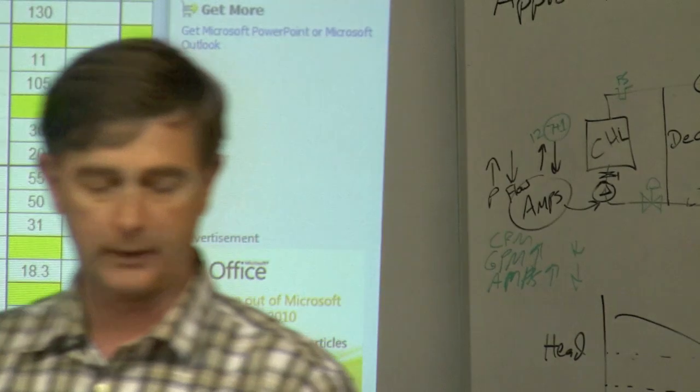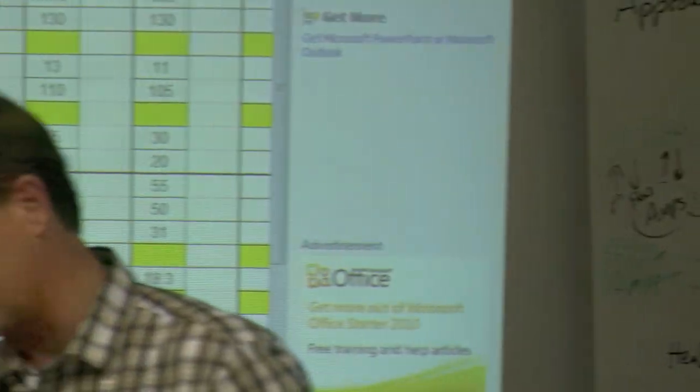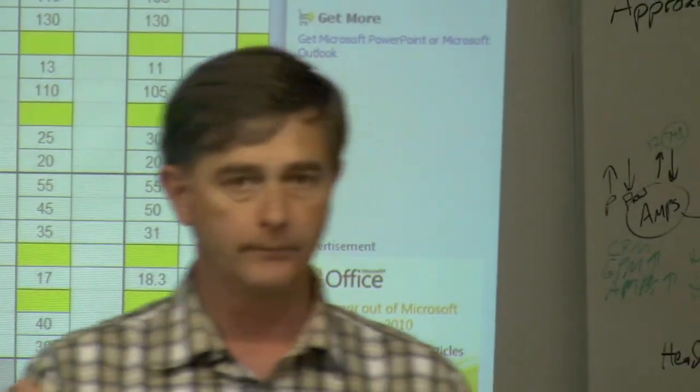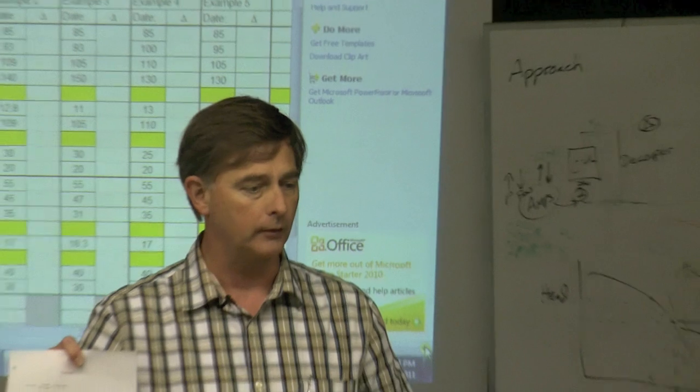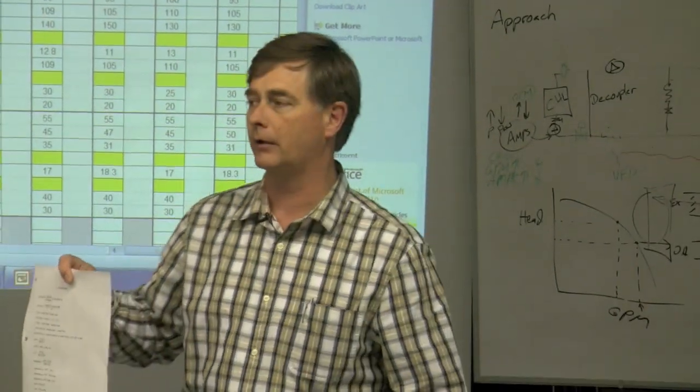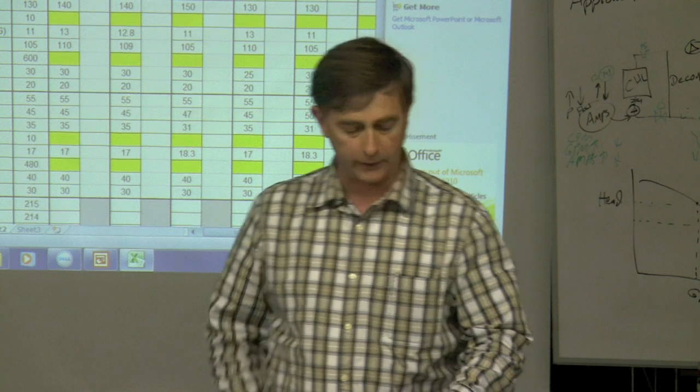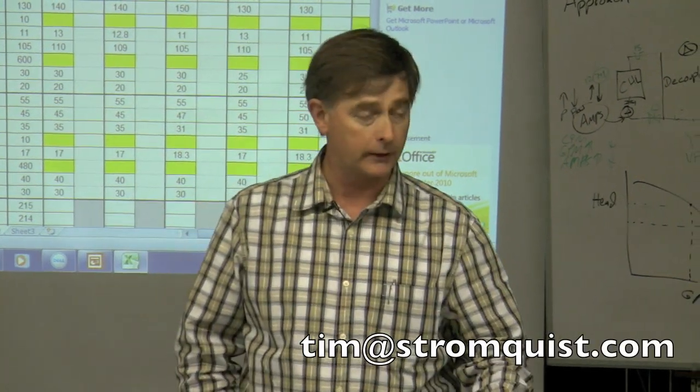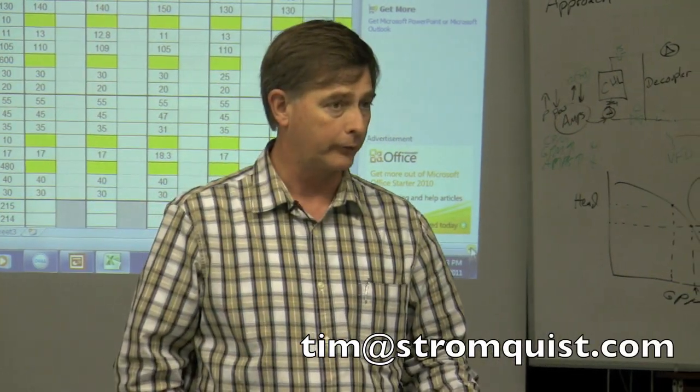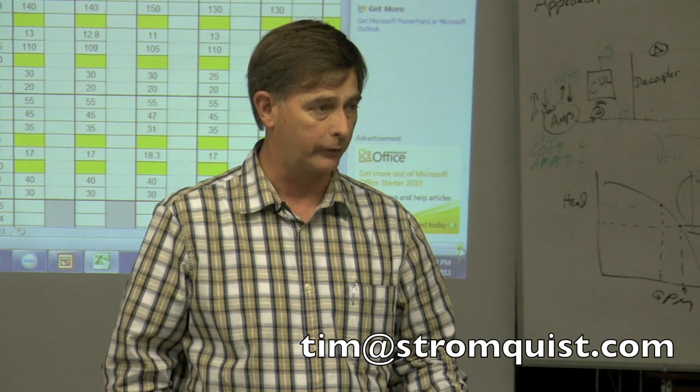So, the first one, calculate GPM of your condenser. Your first formula. Break out your calculators. Let's see if we can do this. Now, you look at your pressure drop across your condenser.